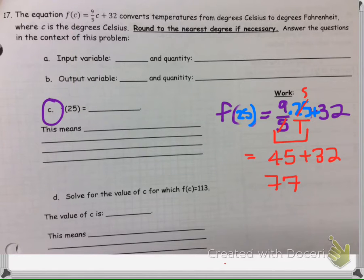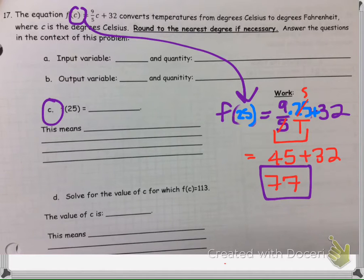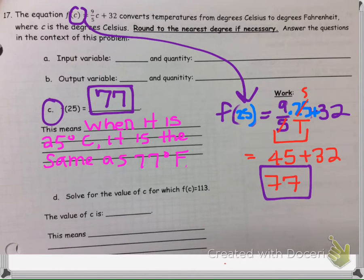So what that represents is when the Celsius is 25 degrees, the temperature is equivalent to 77 degrees Fahrenheit. So our answer is 77, and now we need to explain it. We can say when it is 25 degrees Celsius, it is the same as 77 degrees Fahrenheit. It's the same temperature in a different conversion, Celsius versus Fahrenheit.